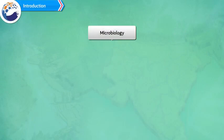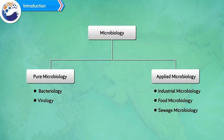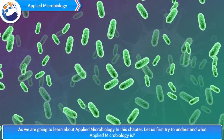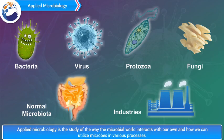The study of microbes is termed as microbiology. It is of two types: 1. Pure Microbiology, for example Bacteriology, Virology, etc. 2. Applied Microbiology, for example Industrial Microbiology, Food Microbiology, Sewage Microbiology, etc. As we are going to learn about Applied Microbiology in this chapter, let us first understand what Applied Microbiology is. Applied Microbiology is the study of the way the microbial world interacts with our own and how we can utilize microbes in various processes.